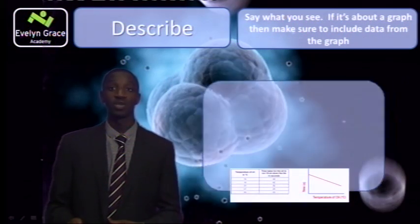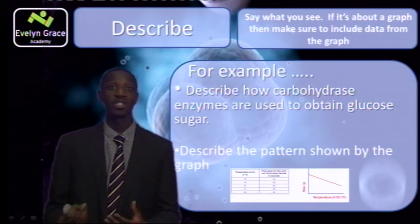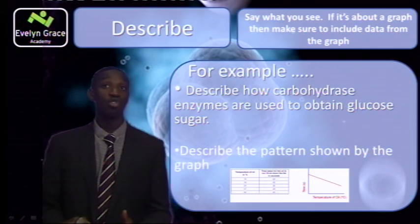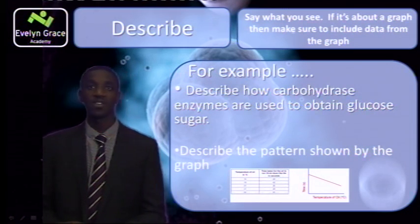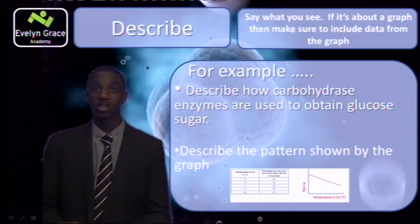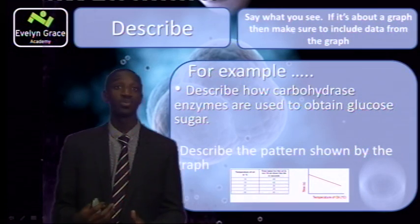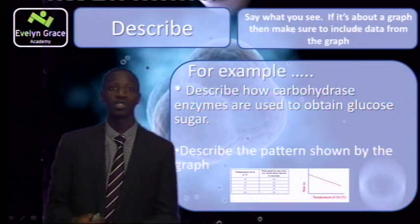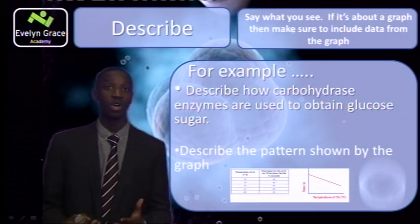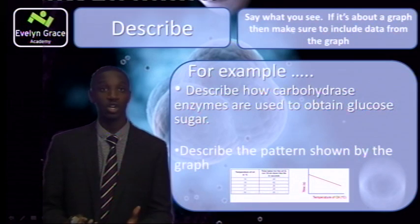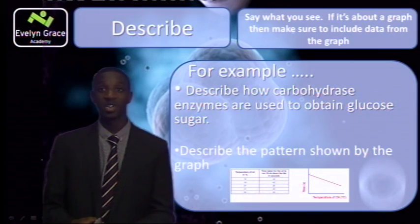The first type of question I'm going to talk about is describe. Describe means say what you see. If there is a graph, data from the graph has to be included. The first example: describe how carbohydrate enzymes are used to obtain glucose sugar. Carbohydrates — what it does — converts starch into glucose. So you may have starch, which is in waste products such as corn stock, which can be converted into glucose by using the enzyme amylase.